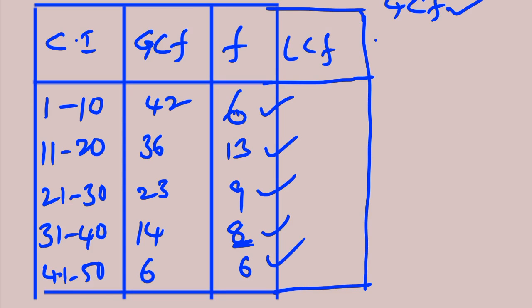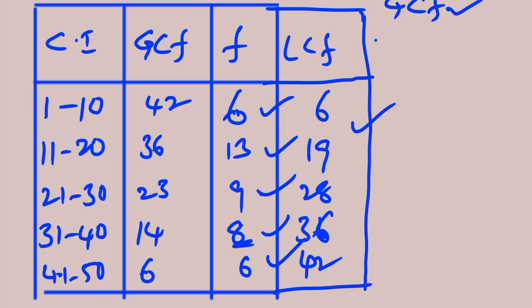They also asked to find the less than cumulative frequency from these frequencies. From the frequencies, add upwards: first frequency is 6, then 6 + 13 = 19, 19 + 9 = 28, 28 + 8 = 36, 36 + 6 = 42. So these are the LCF values. I hope you understand well. If not, watch this video again slowly. Don't forget to subscribe to this channel and share these videos with your friends. Thank you very much.